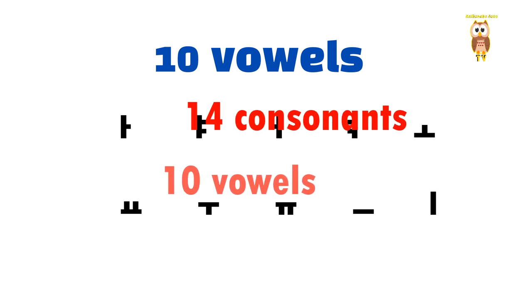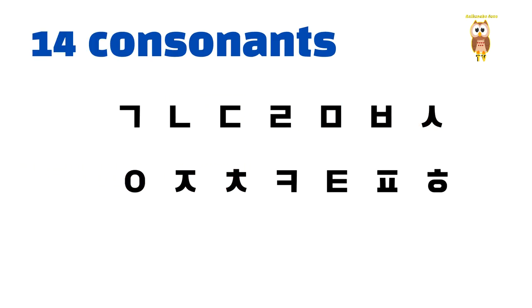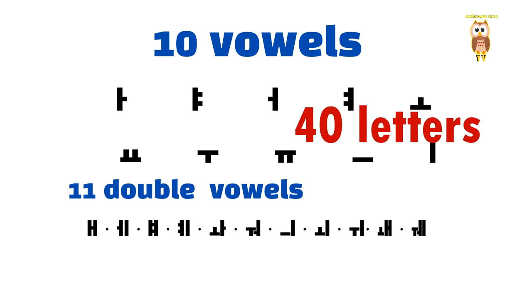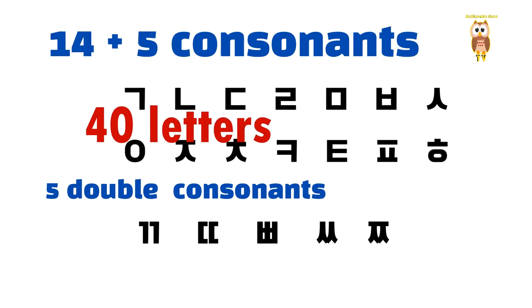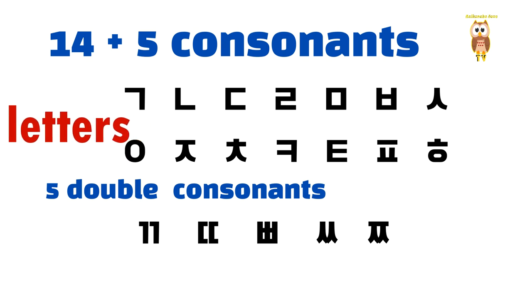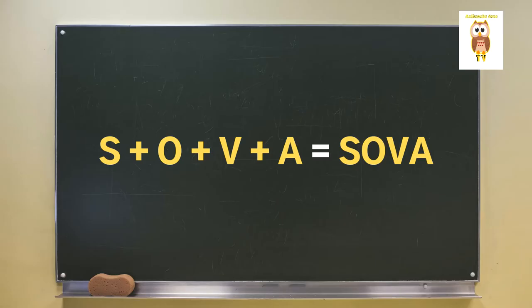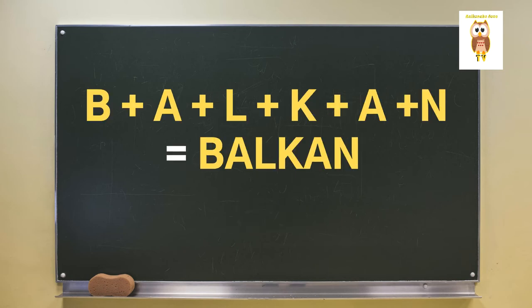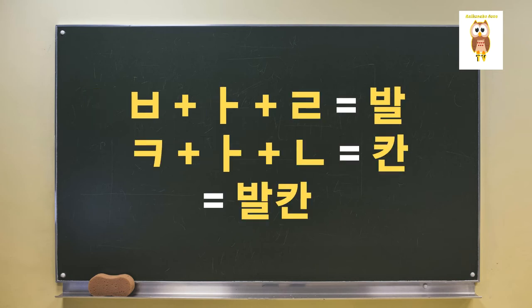That is, Korean letters consist of twenty-four alphabets. Going a little deeper, there are also five double consonants and eleven double vowels, making up forty alphabets. The basic principle of writing in Korean is a structure to make one letter with the composition of consonant-vowel-consonant. For example, looking at 'Sova' — it is S-O-V-A. In Korean, it becomes one written unit. If you look at 'Balkan' — it becomes B-A-L-K-A-N. In Korean, it becomes another written unit. One letter must combine consonant, vowel, and consonant to form a character.